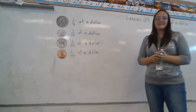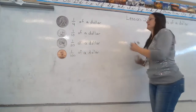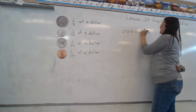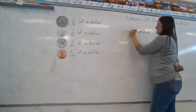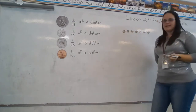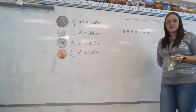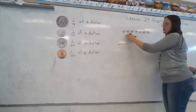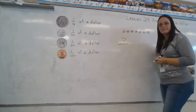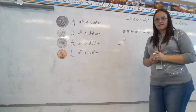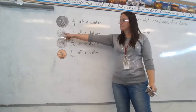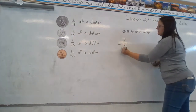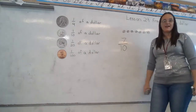Mia has seven dimes — I can even draw them here. They're dimes, they're worth ten cents. What fraction of a dollar does Mia have? How many are we talking about? She has seven. How many dimes does it take to make a dollar? You can look back over here if you need to. Ten. It takes ten dimes to make a dollar. So Mia is holding seven-tenths of a dollar.